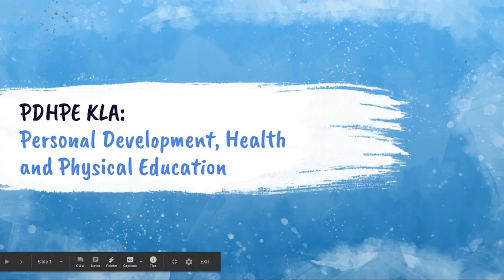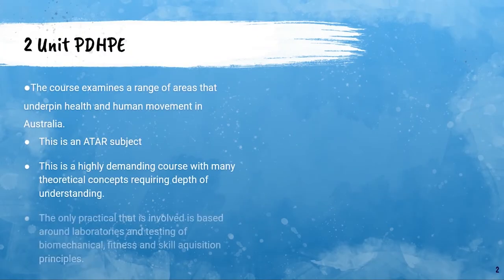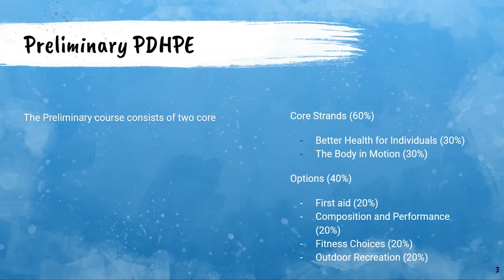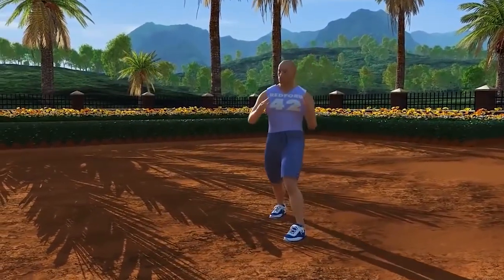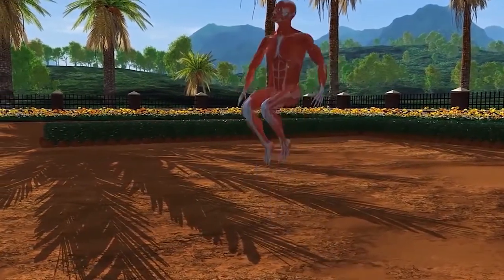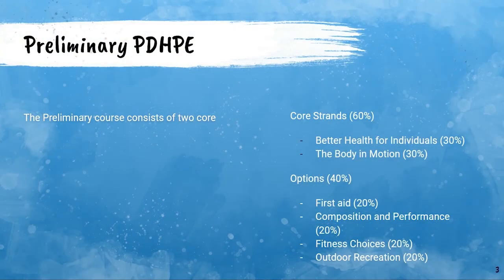Hi and welcome to PDHPE. I'm going to go through a few reasons why you should choose this subject. This is an ATAR subject — it is a highly demanding course with a large amount of theory content. The preliminary course is made up of course strands and options. You will look at Better Health for Individuals and The Body in Motion within the core strand. In The Body in Motion we look at anatomy — the bones, muscles, and how the body works. Within Better Health for Individuals we look at how a person improves their health care.